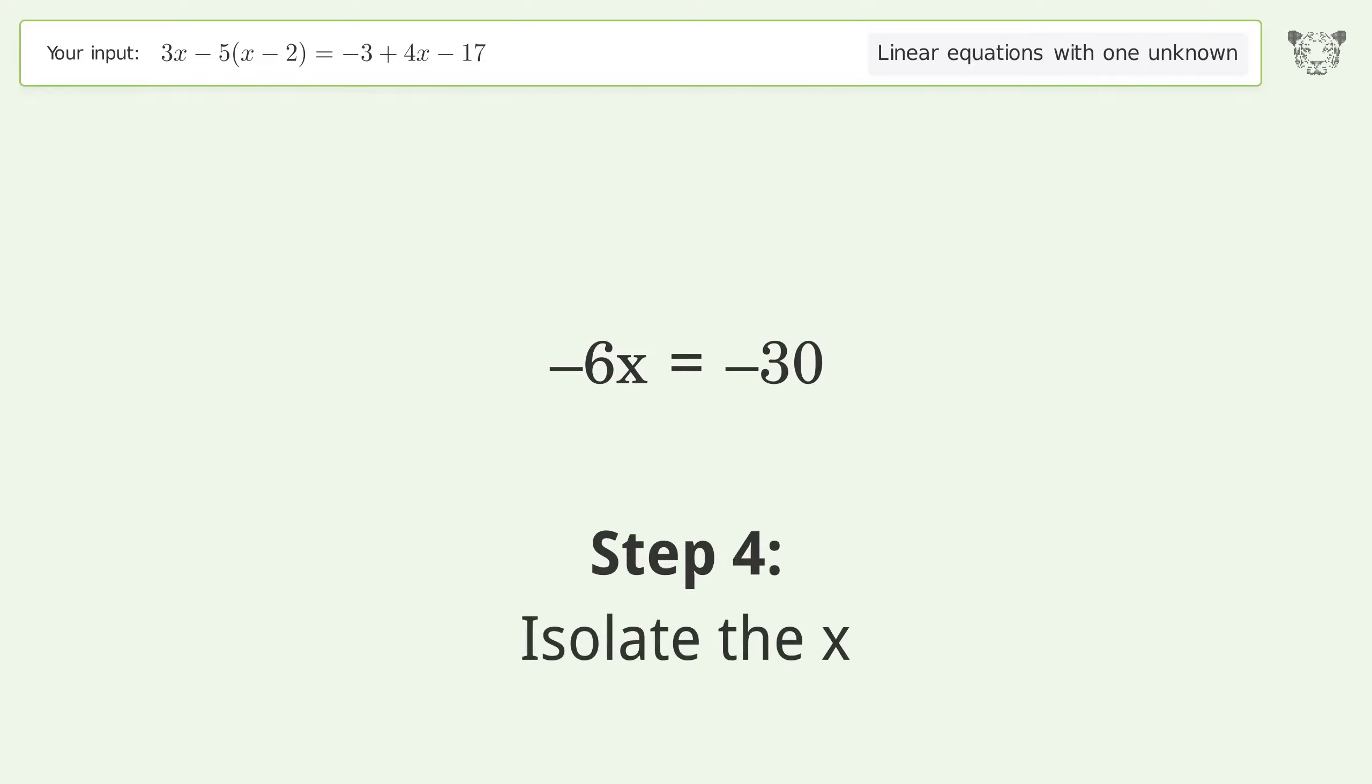Isolate the x. Divide both sides by negative 6. Cancel out the negatives.